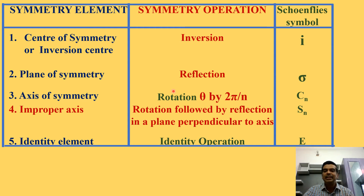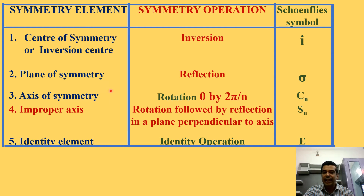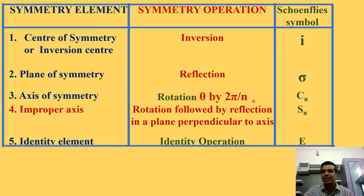The third symmetry element is the axis of symmetry. The symmetry operation corresponding to the axis of symmetry is rotation by an angle theta, equal to 2π/n, where 2π/n is 360 degrees divided by n, and n is the order of the rotational axis of symmetry.